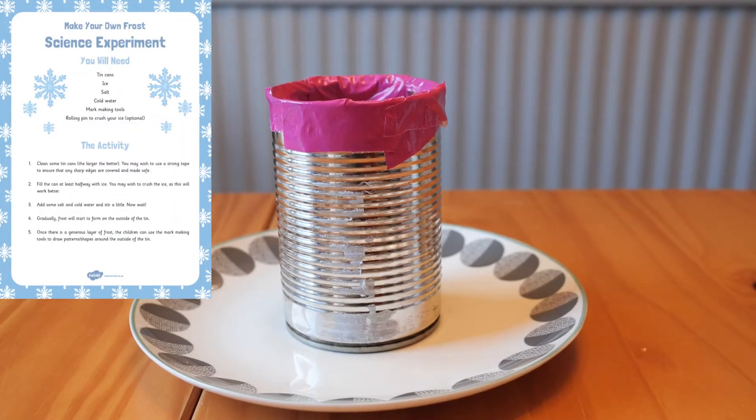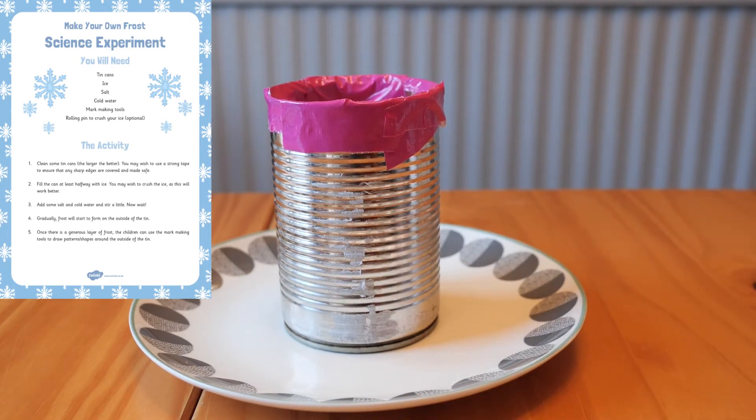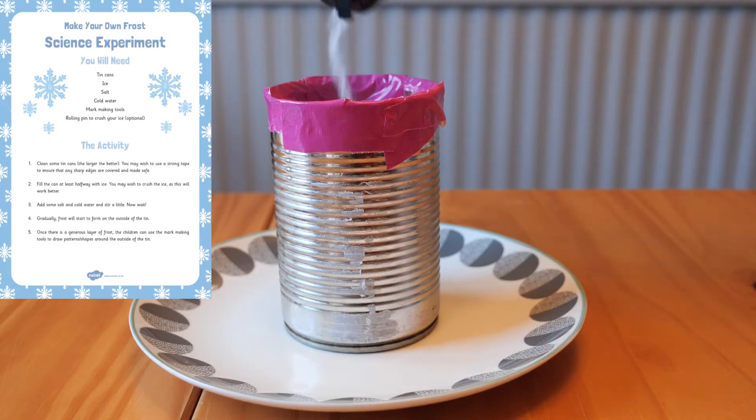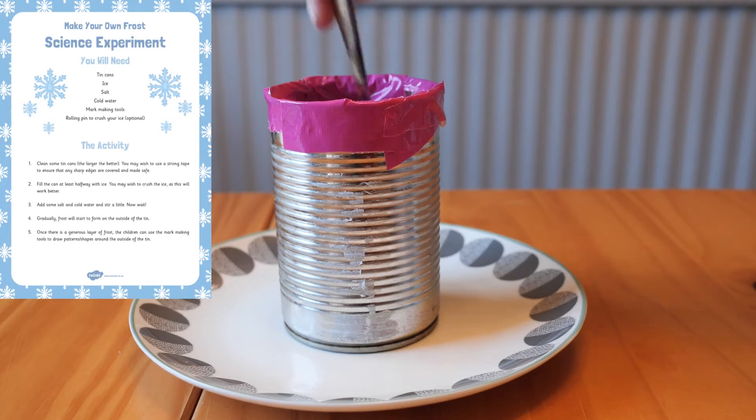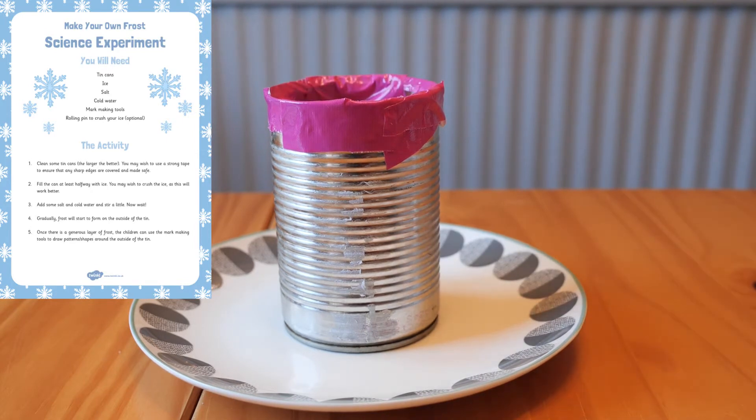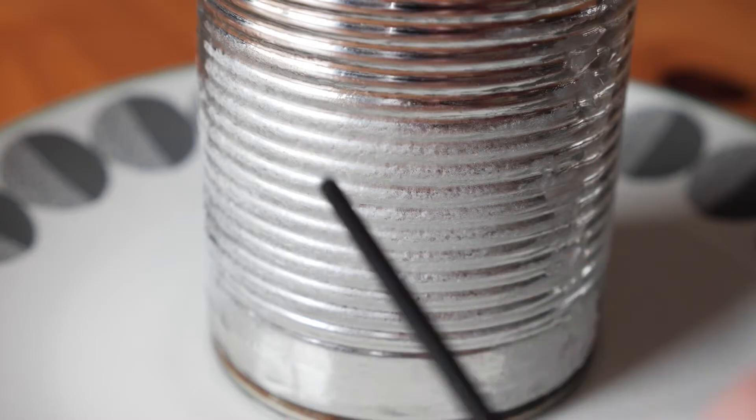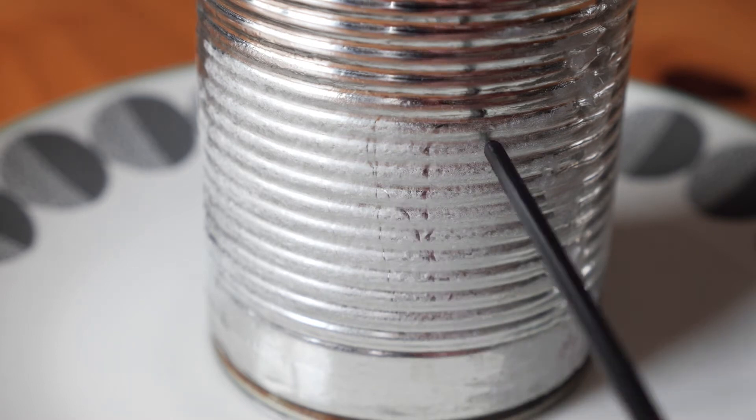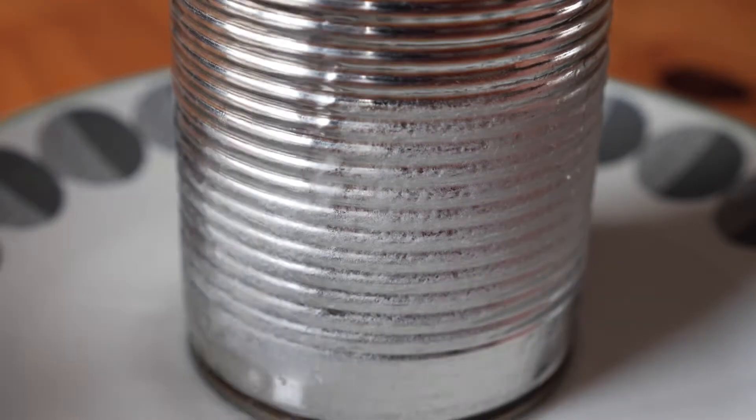Why not try a science experiment where children can make their own frost. Simply add ice, salt and water together and get ready to watch the frost form. Children can then mark make on the outside of the tin can where the frost has formed.